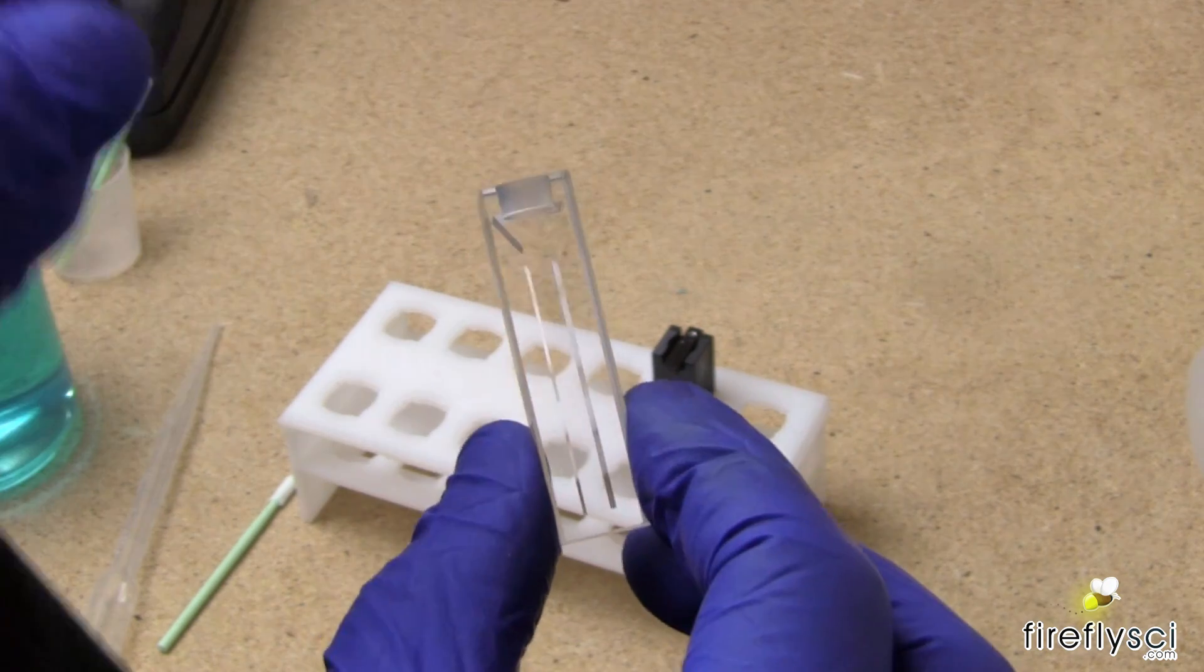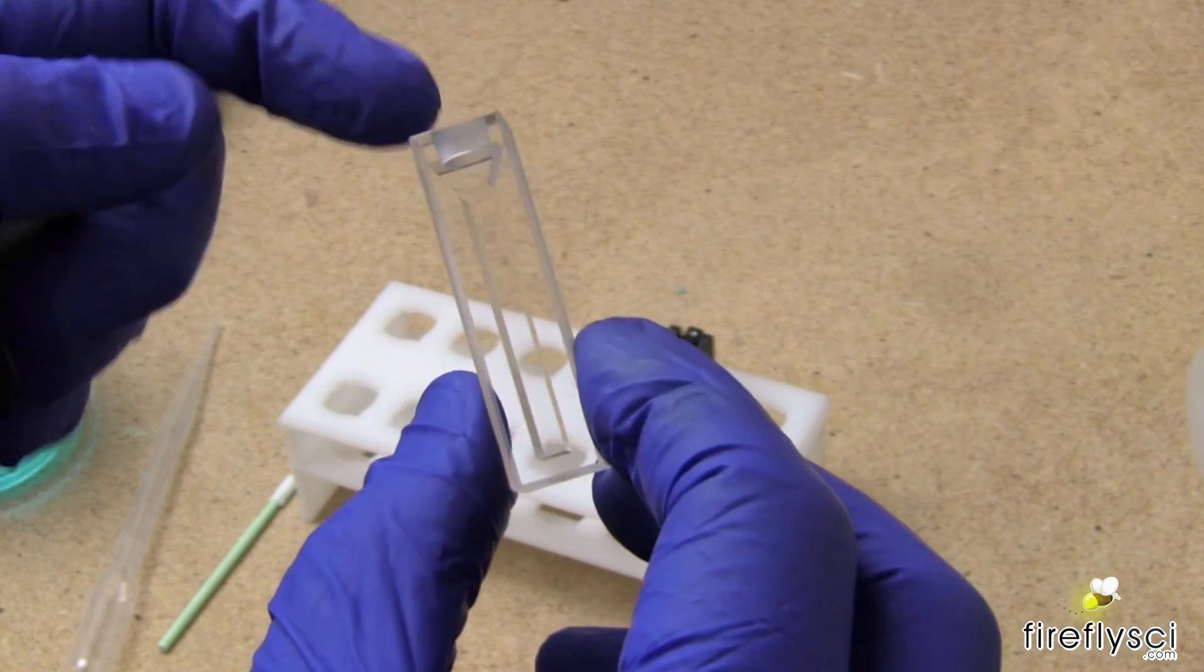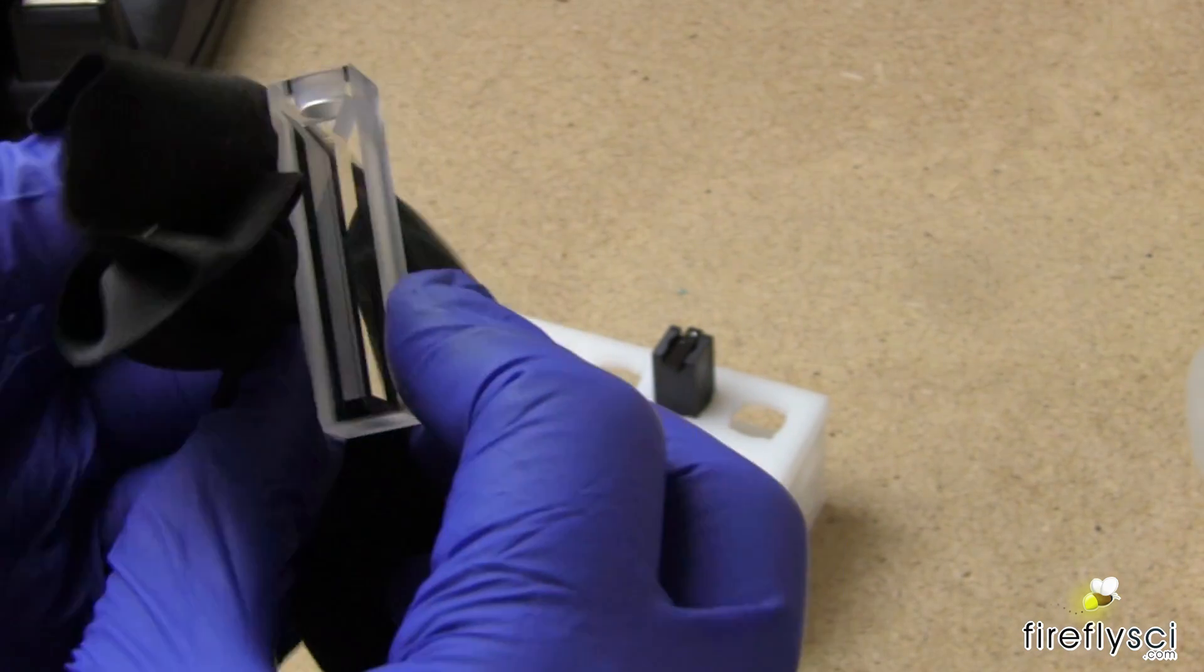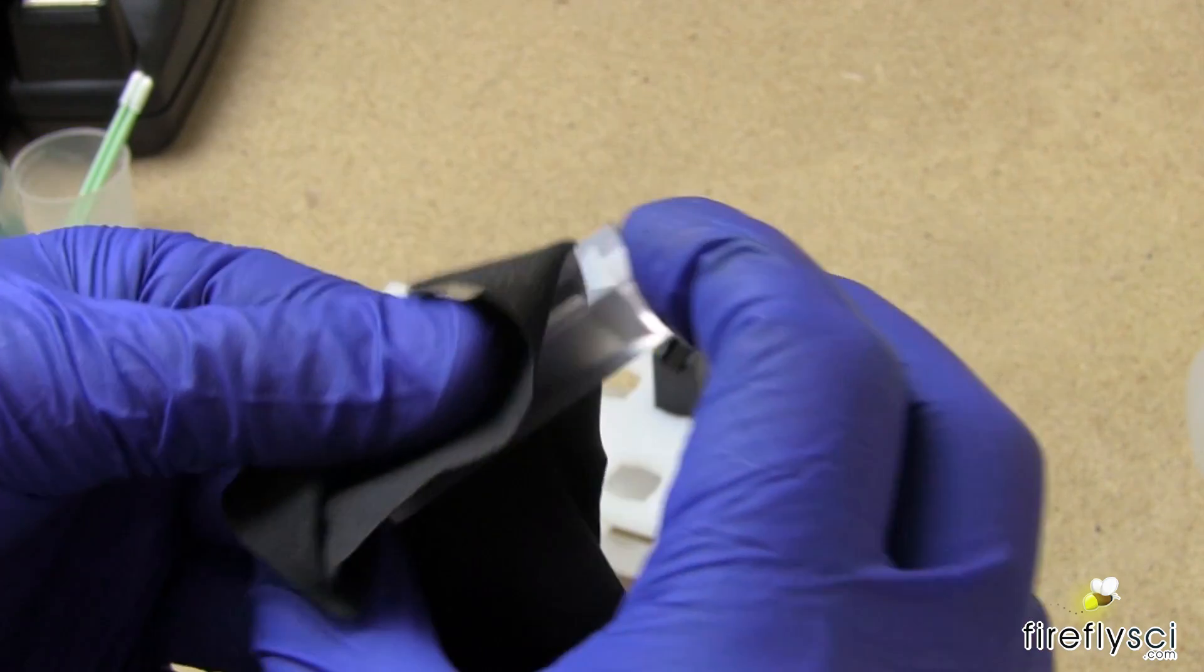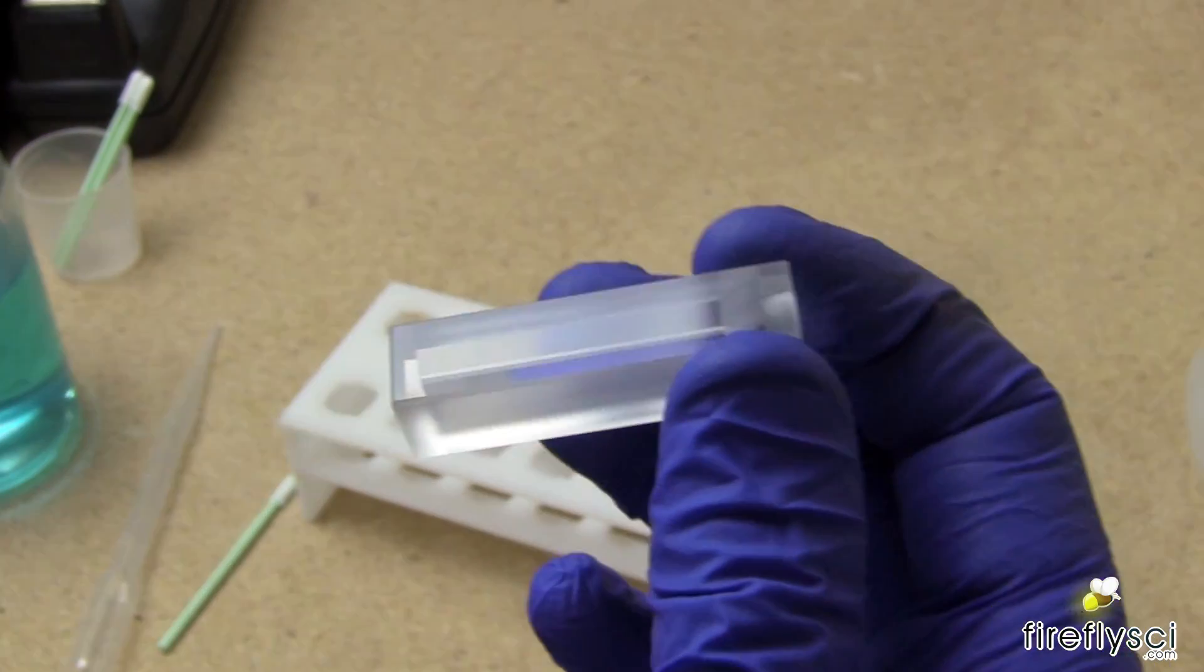Once you check the inside, you should also check the outside to make sure that there's nothing on the outside. Most likely fingerprints, and I'll just take a lens cloth here and just gently rub the windows here. And this looks pretty good. This looks like we're ready to go.